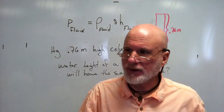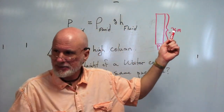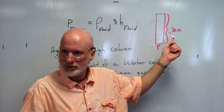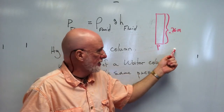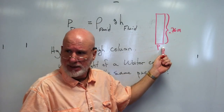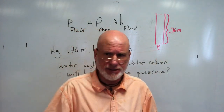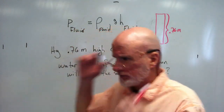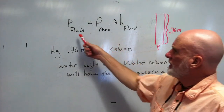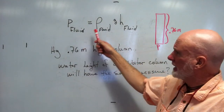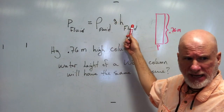We have a column of mercury 0.76 meters tall, and it's going to have a pressure at the bottom of the column. The question is: if the pressure of a fluid is based on the density of the fluid times g times h,